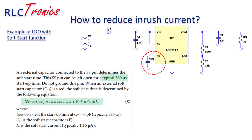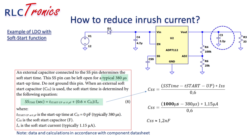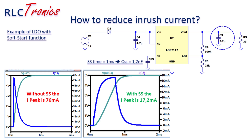According to the datasheet of this regulator, there is already a soft start time of 380 microseconds by default, but if we want to increase it, we need to place a capacitor at the pin SS following that equation. In this example, we can manage the inrush current caused by an output capacitor of 2.2 microfarads. Let's calculate a soft start capacitor for 1000 microseconds and run an LTSpice simulation to see the difference. As you can see, increasing the soft start time from 380 microseconds to 1 millisecond reduces the inrush current from 76 milliamps to only 17.2 milliamps on the output capacitor.